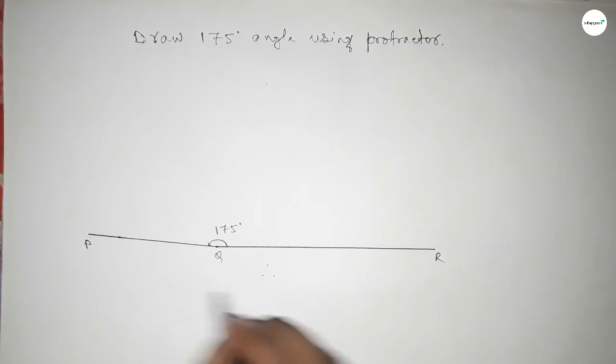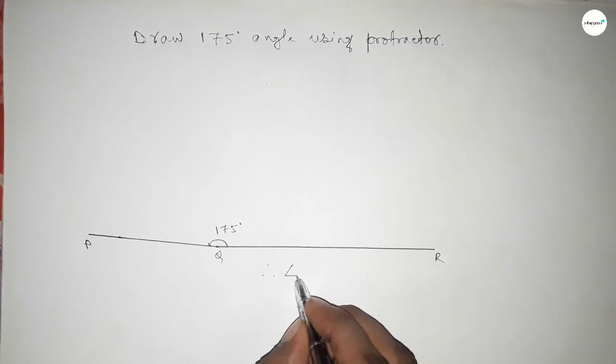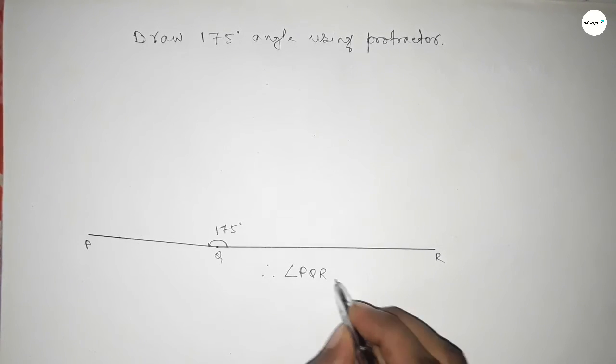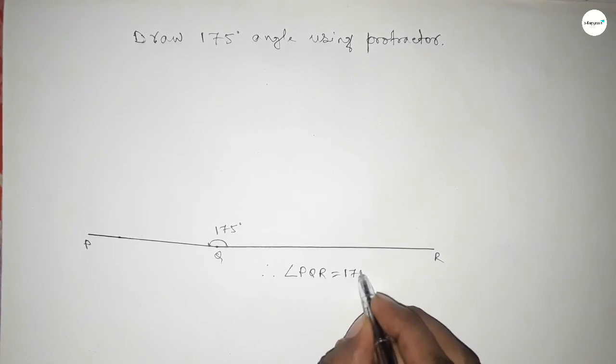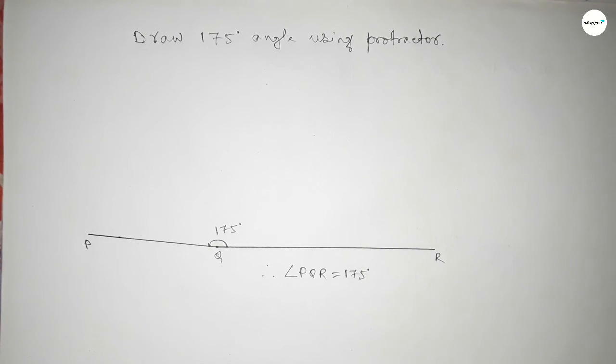Angle PQR. Therefore angle PQR equal to we can write 175 degrees. That's all, thanks for watching. If this video is helpful then share it with your friend.